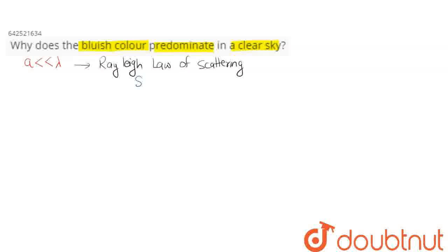Scattering is inversely proportional to the fourth power of wavelength. That is, the amount of scattering, how much light will get scattered, is directly proportional to 1 by lambda power 4, inversely proportional to the fourth power of wavelength.